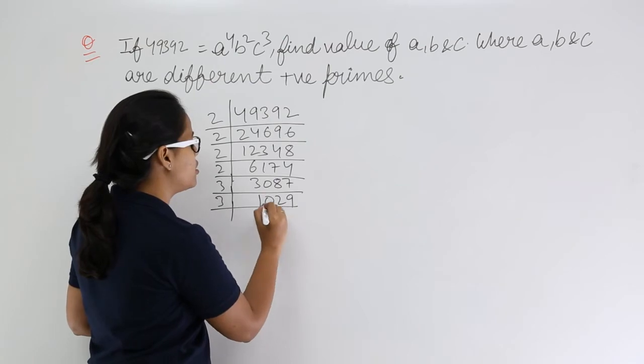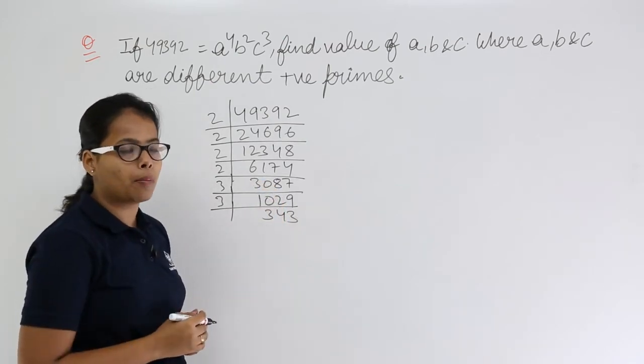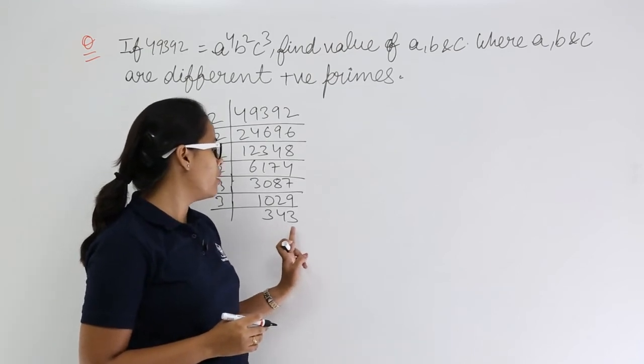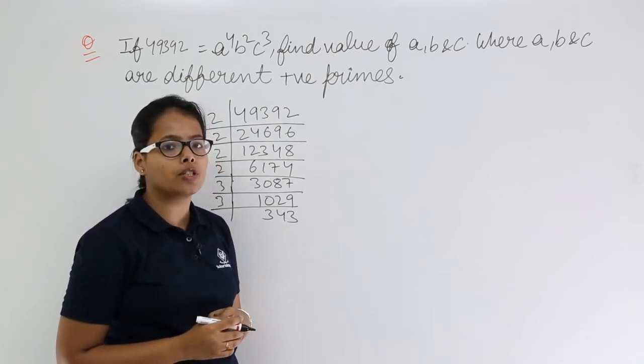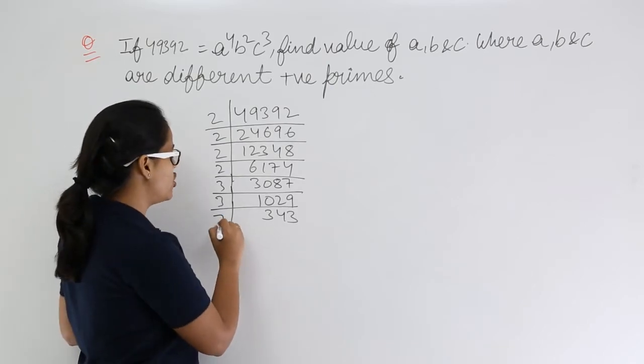Again check, this is 343. Now this number is not divisible by 3. You can check: 1, 1, 1, 3. There will be a remainder of 1, so it is not divisible by 3. This number is divisible by 7. You can check.